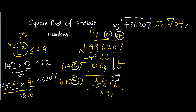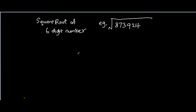Let's move on to the next 6-digit number to reinforce our understanding of how to square root a 6-digit number without using a calculator. We are going to try 873924. Same thing — the first step is to split this 6-digit number into 3 pairs of 2-digit numbers, which in this case is 87, 39, and 24.